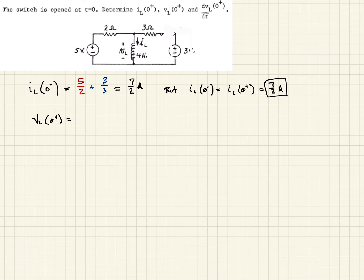So therefore, the right half of the circuit does not matter. And then we can say the expression for the voltage will just be the 5 minus 2, the resistance, times IL at 0 plus. Well, we know that. That's 5 minus 2 times 7 halves. When we calculate that out, we get minus 2 volts.